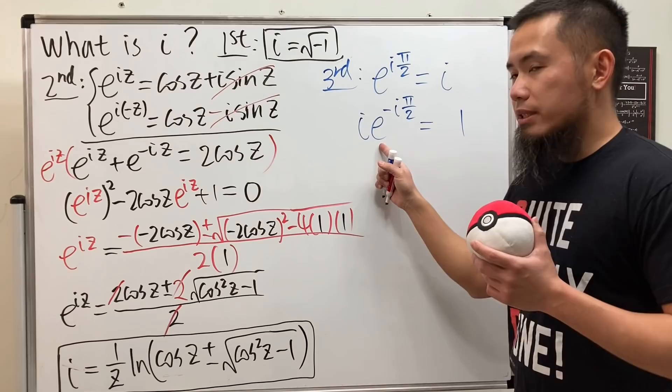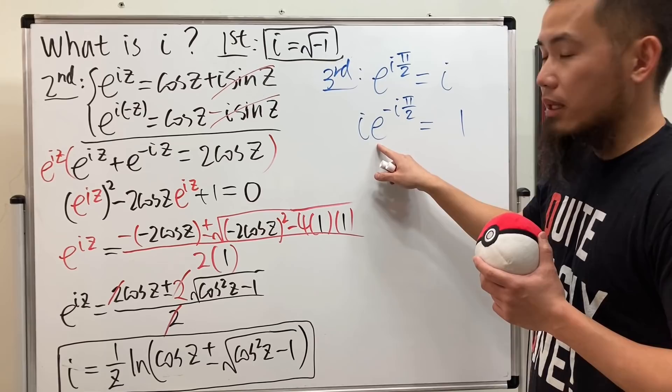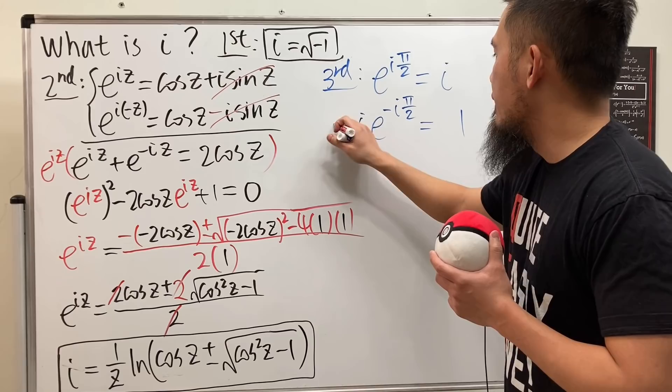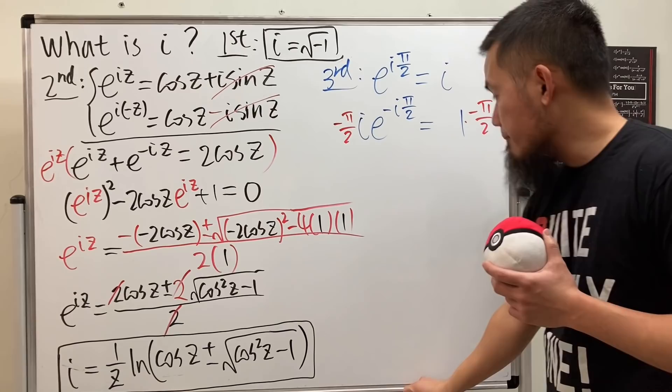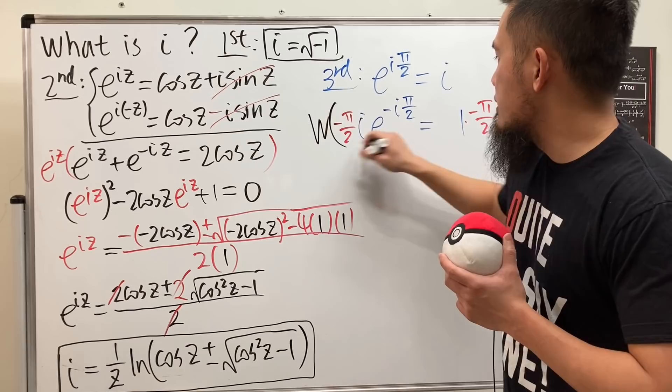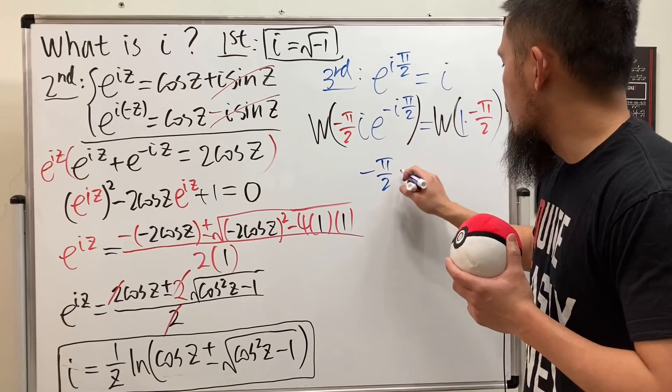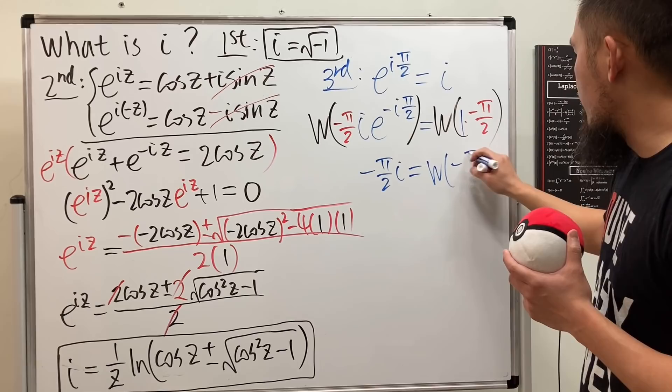And now you see we have the e to this power. Well, this is very nice because what? All we need to do is make sure this and that match so you can take the Lambert W function. So all we need is just the negative pi over 2. So let's go ahead and multiply by negative pi over 2 and that's multiplied by negative pi over 2. Now, because this and that are equal, we can just take the Lambert W function on both sides and on the left side here, we'll just get this back, which is negative pi over 2i and that's equal to W of negative pi over 2.